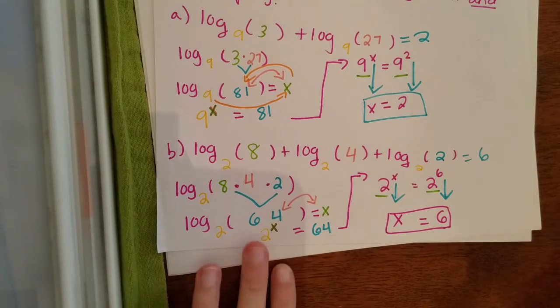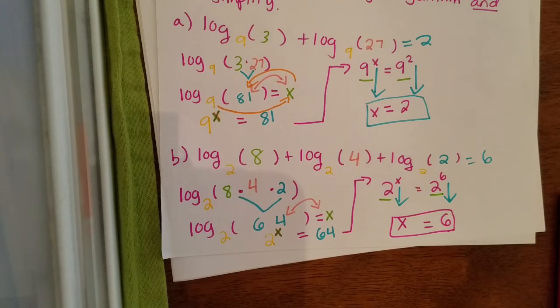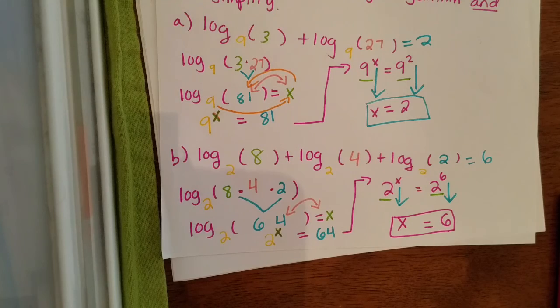Now we're going to move on to something called the quotient property, so brace yourself for examples 3 and 4.